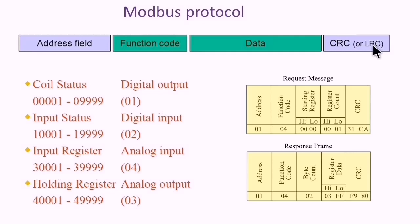The way CRC works: the transmitter applies a calculation on the bytes of the full message, and based on that generates the CRC value. Then the receiver applies the same calculation on the received message.